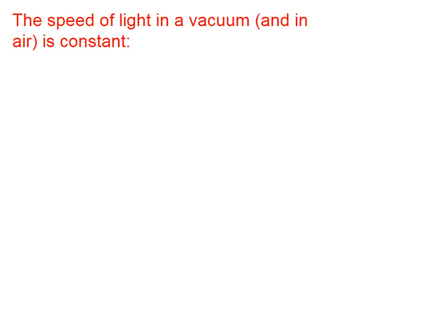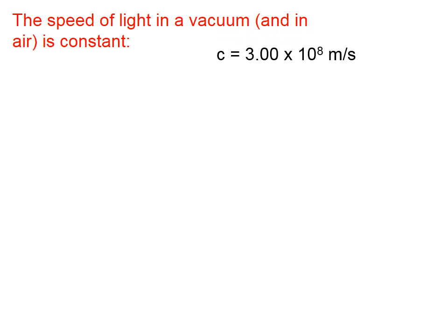The speed of light in a vacuum and in air is constant, and there is its value: 3.00 times 10 to the 8th meters per second, or 300,000 kilometers per second, or 186,000 miles per second.